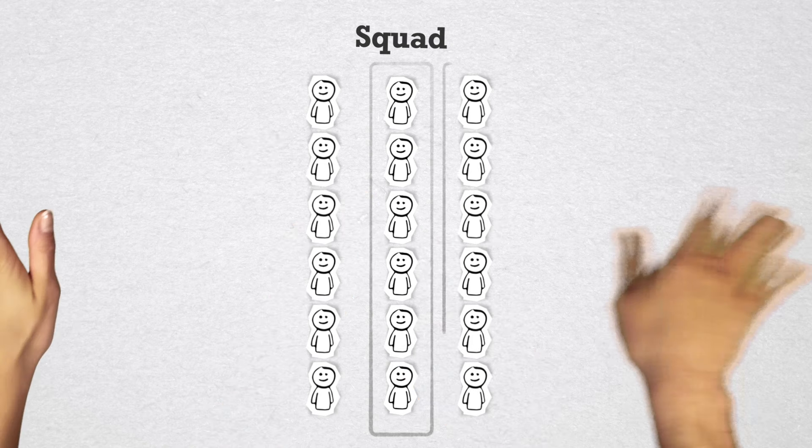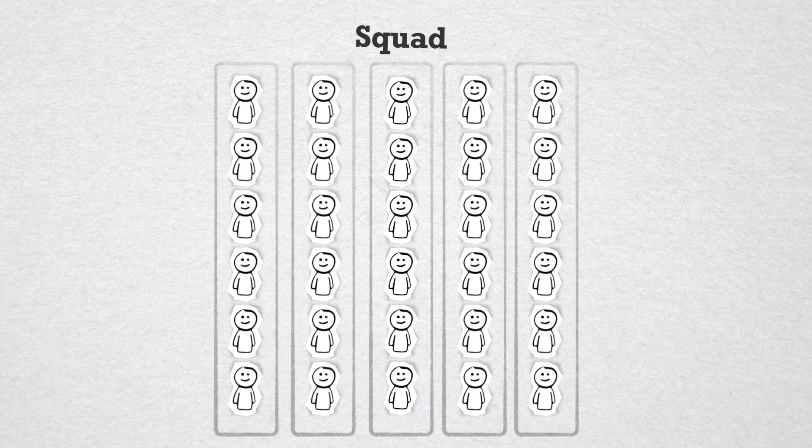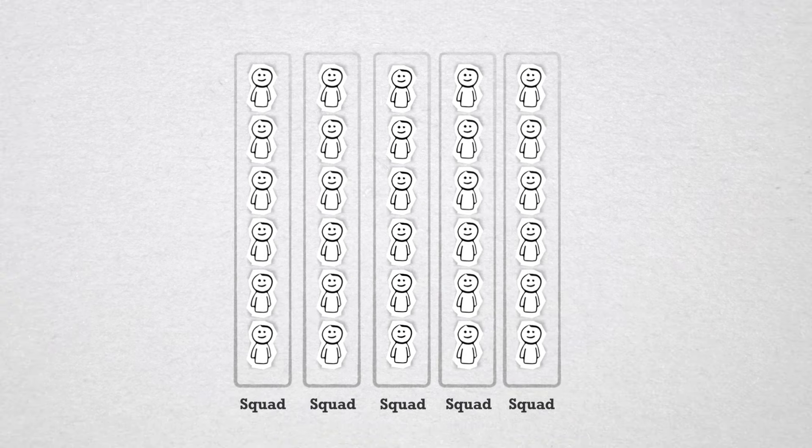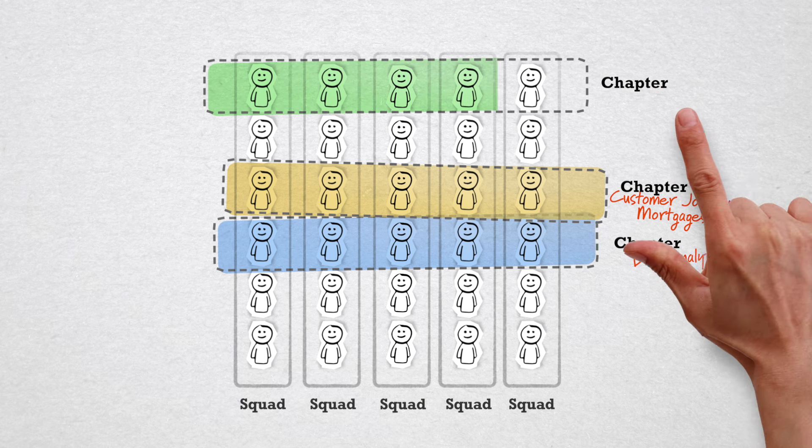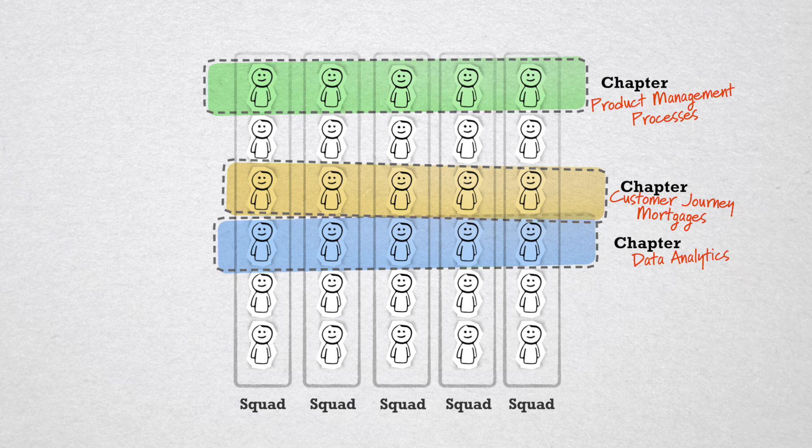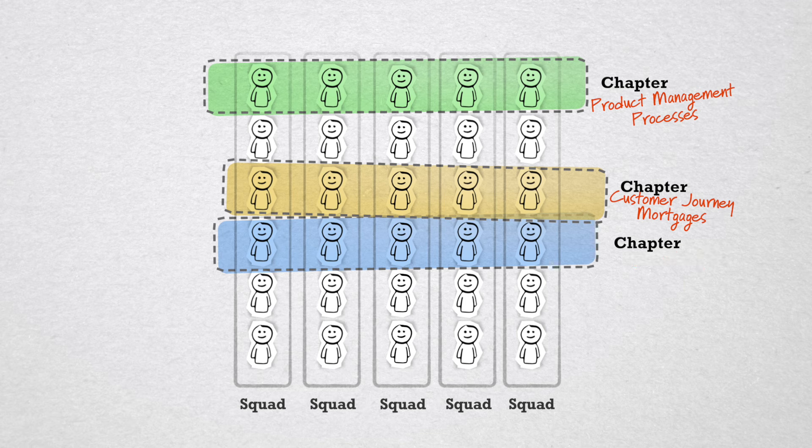Coordination between members of the same discipline takes place inside chapters. There is, for example, a chapter data analytics, a chapter customer journey mortgages, a chapter product management processes. Chapters determine how jobs should be tackled.